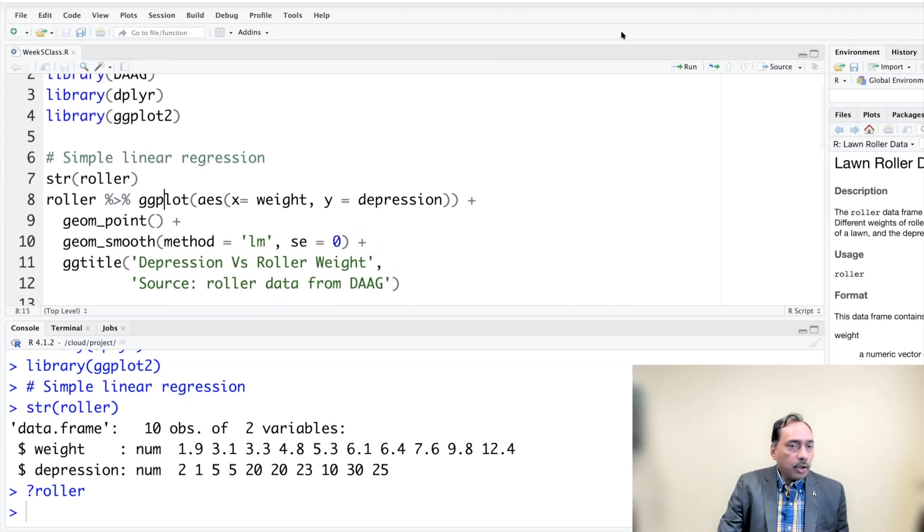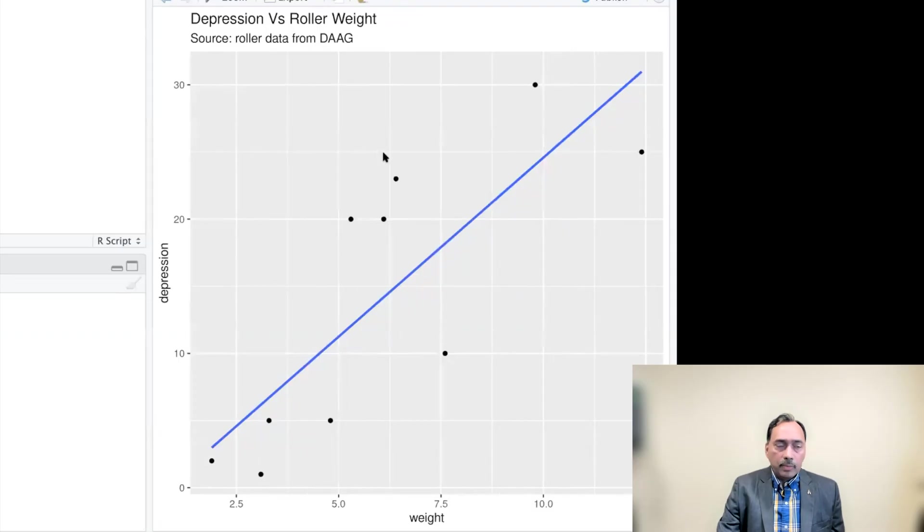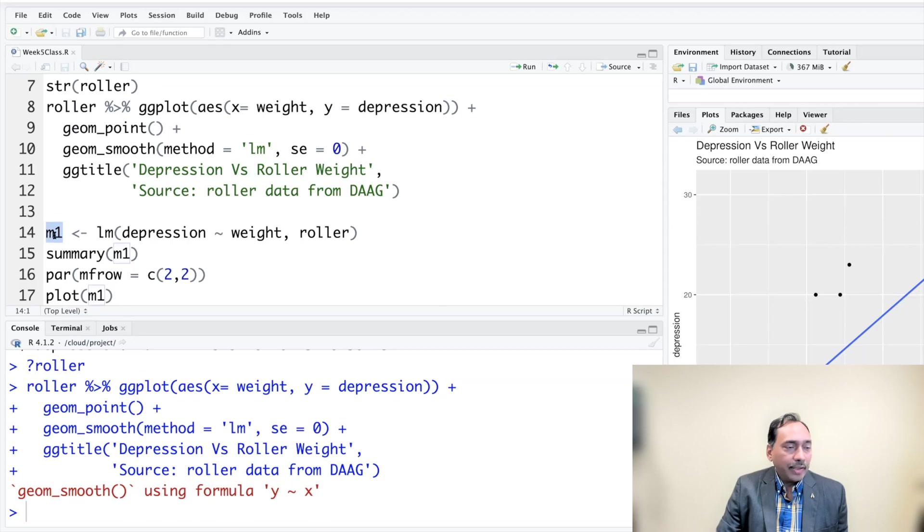If you make a scatter plot, you get this picture. In line 14, I'm storing this linear model in M1. So I have an arrow pointing to M1 and LM is linear model.